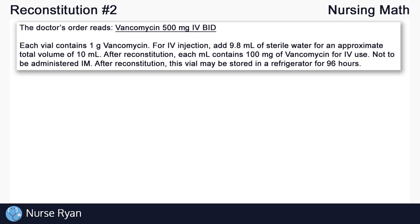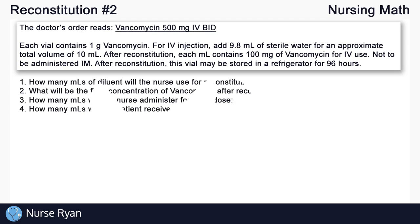After reconstitution, this vial may be stored in a refrigerator for 96 hours. That's our doctor's order and our information from the vial. Now our questions are as follows: 1. How many mls of diluent will the nurse use for reconstitution? 2. What will be the final concentration of vancomycin after reconstitution? 3. How many mls will the nurse administer for each dose? 4. How many milliliters will the patient receive in one day?